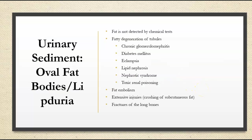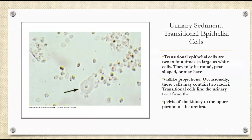Fat is not detected by any of our chemical tests. Fatty degeneration of the tubules can occur in chronic glomerulonephritis, diabetes mellitus, eclampsia, preeclampsia, lipid nephrosis, nephrotic syndrome, and toxic renal poisoning. Or if we have a fat embolism, or if there are extensive injuries with crushing of subcutaneous fat or fractures of long bones.